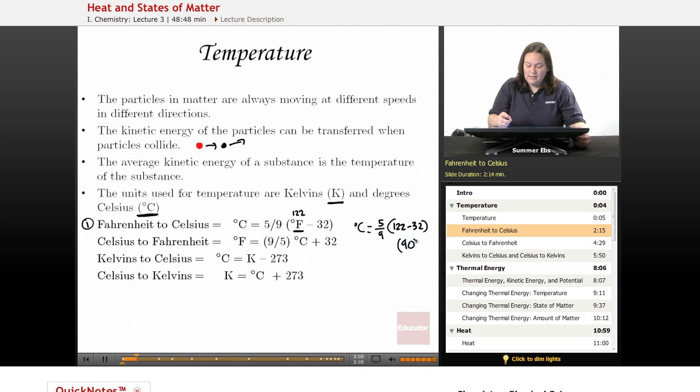122 minus 32 is going to give you 90. So you'll have 90 times 5 ninths equals your degrees Celsius. So these will cancel, and you'll end up with 50 degrees Celsius is what you have.